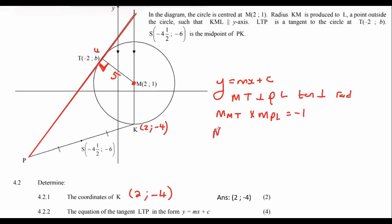So we can work out the gradient of MT by using the gradient formula. I'll use, let's just say that's a 4. I'm going to use this as position or point number 1, and this as point number 2. Doesn't really matter. You can choose it the other way around. And so that's going to be 1 minus 4 over 2 minus negative 2. And that's going to give negative 3 over 4.